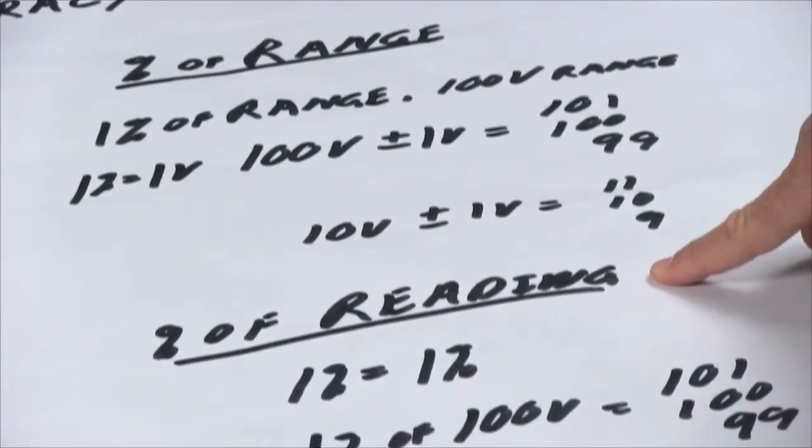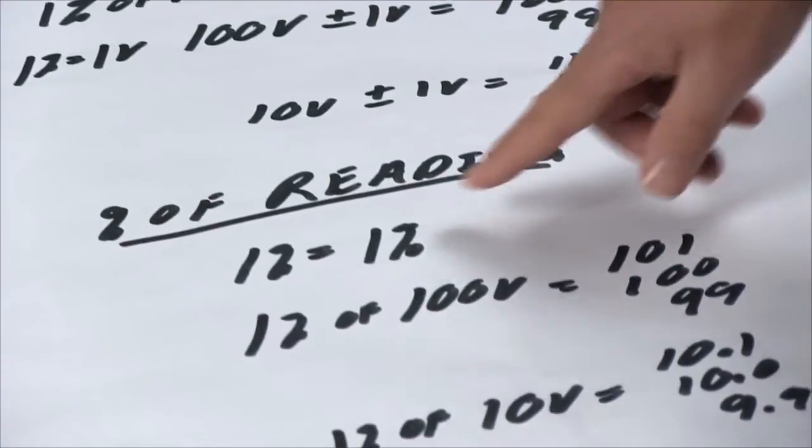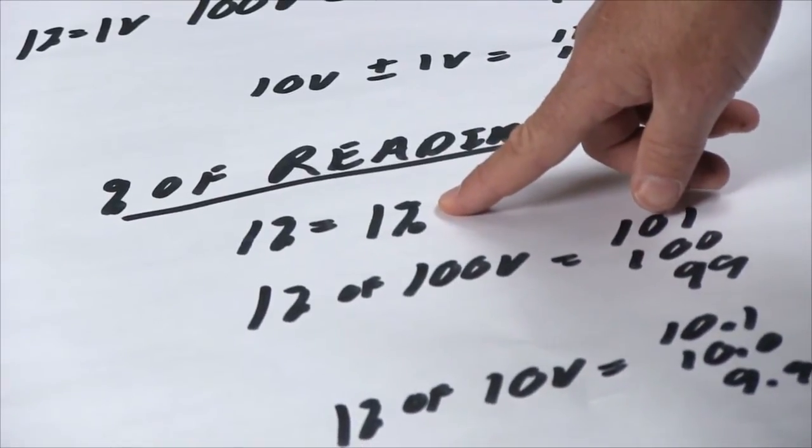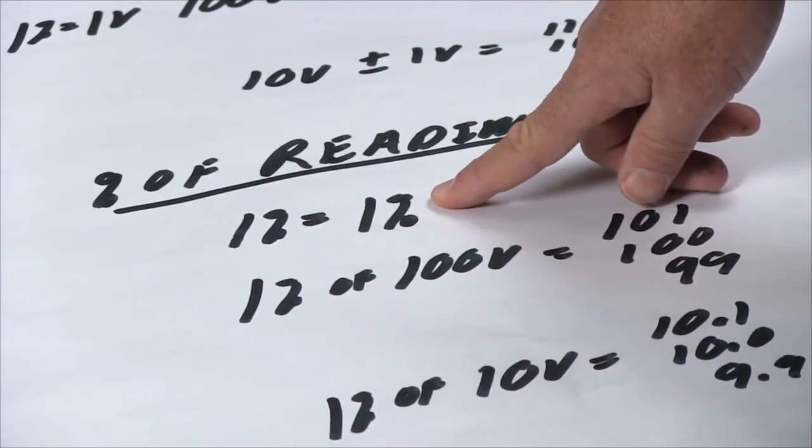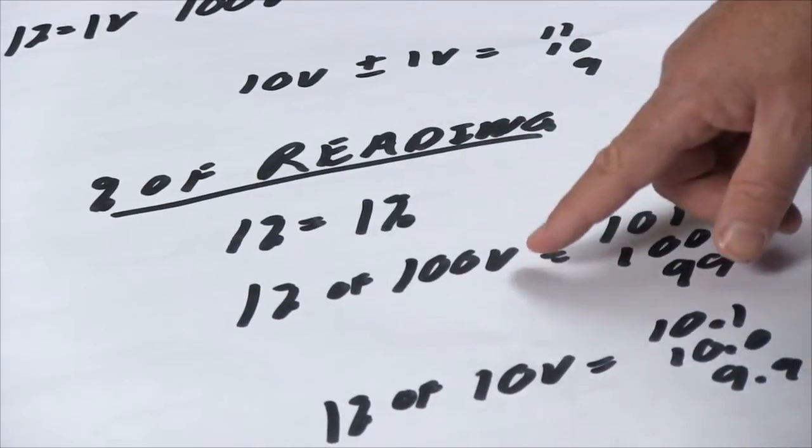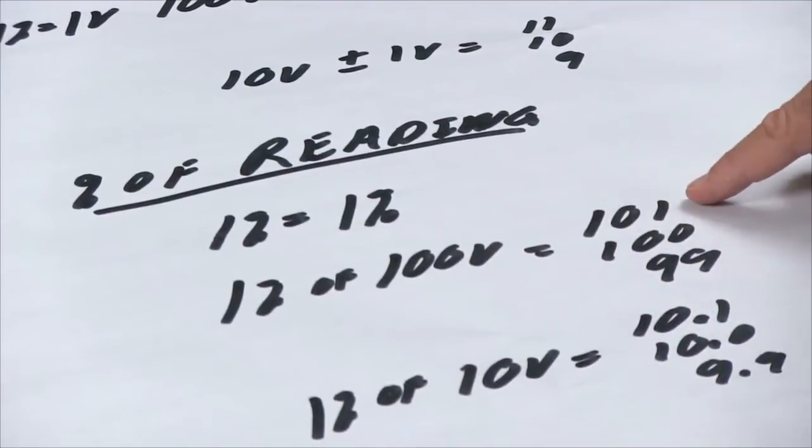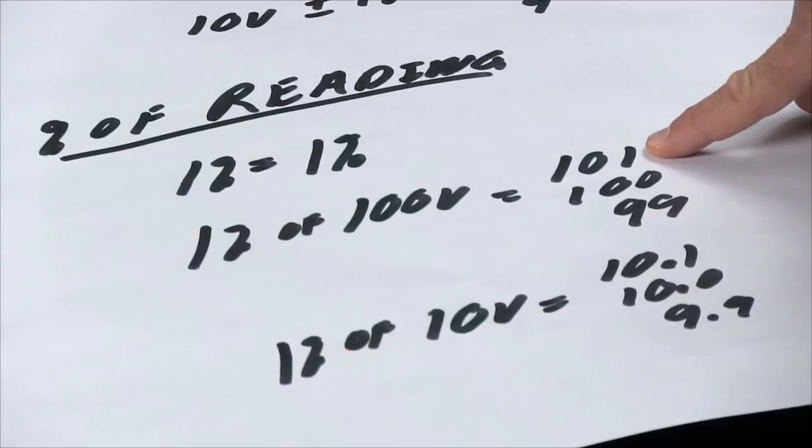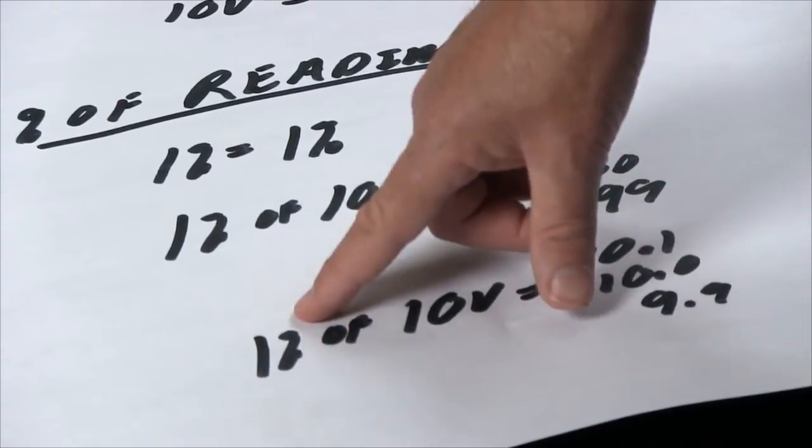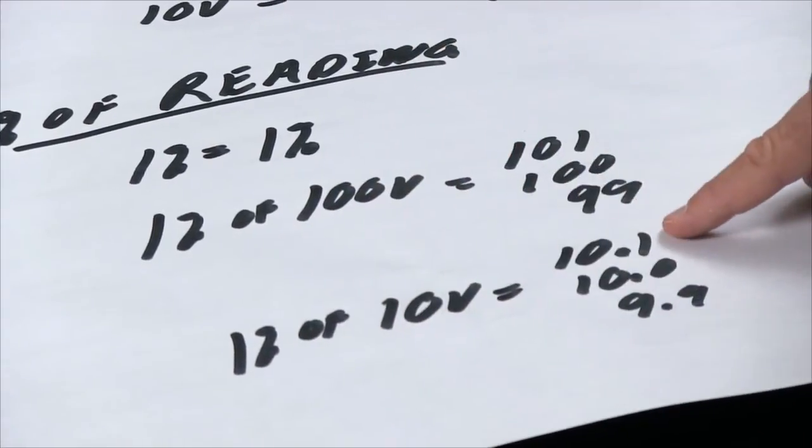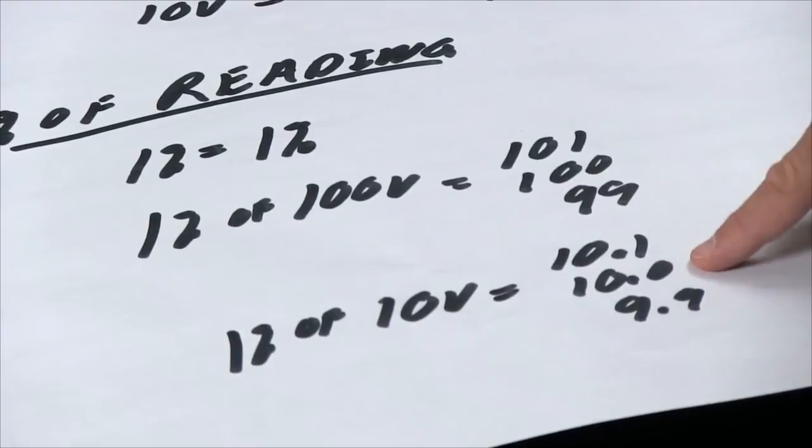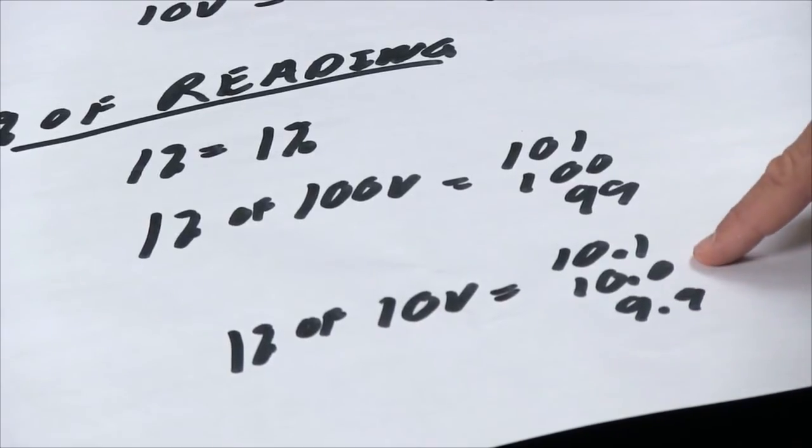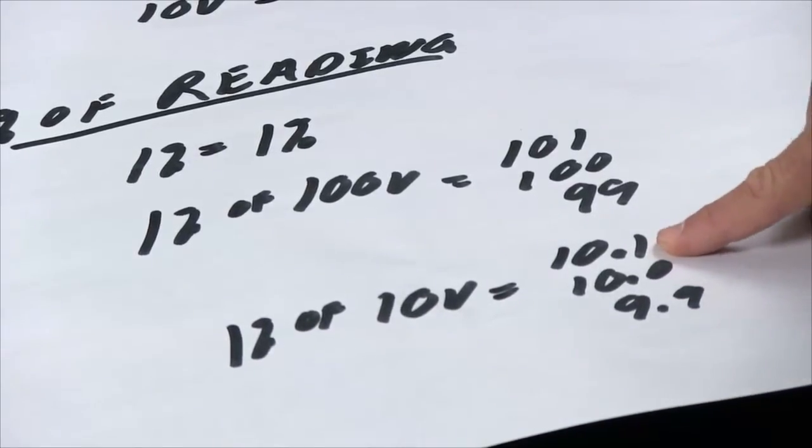A better way is to buy an instrument that has percent of reading. Then one percent is one percent—it doesn't matter what value or what range you're on. So one percent of a hundred volts is plus or minus one volt. One percent of ten volts is plus or minus a tenth of a volt.